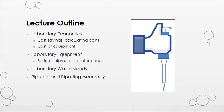As I was putting this lecture together, it seemed a little bit disjointed despite my best effort, so my apologies for that. Here's a quick outline of this lecture. We're going to briefly discuss laboratory economics, including cost savings, calculating costs, and equipment costs. Then we're going to move on and discuss basic lab equipment, different types of lab water, and finally pipettes and pipetting.